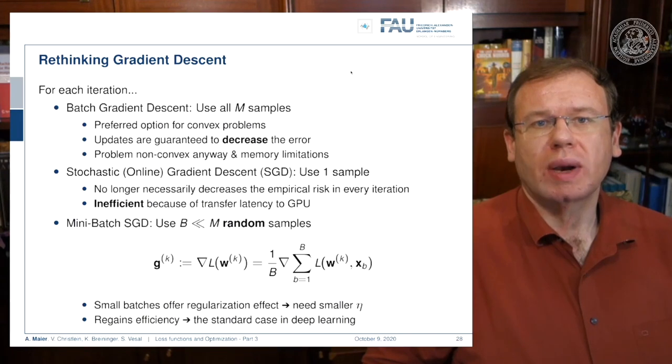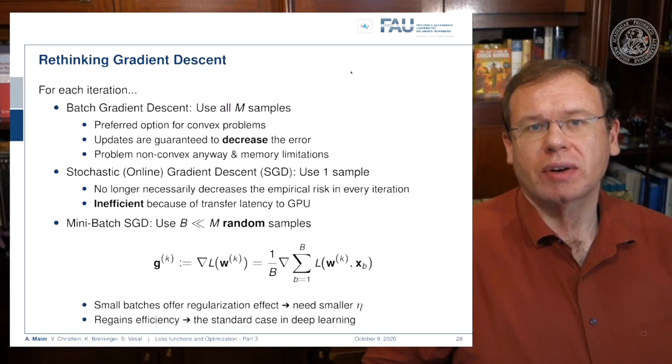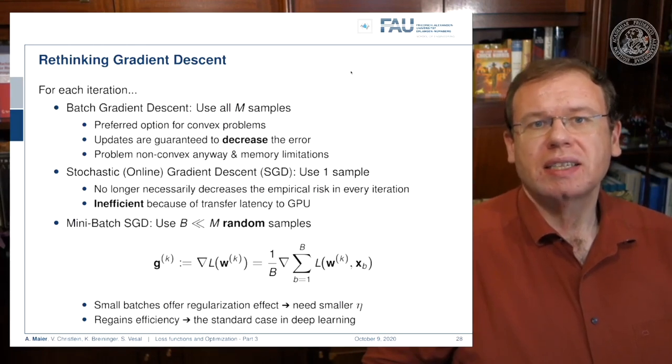Then you just do the weighted sum and update. Small batches are useful because they offer a kind of regularization effect. This typically results in smaller eta, so if you use mini-batch gradient descent typically smaller values of eta are sufficient and it also regains efficiency. This is the standard case in deep learning.